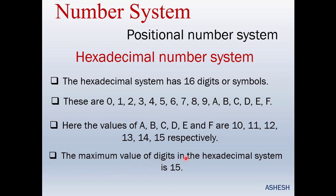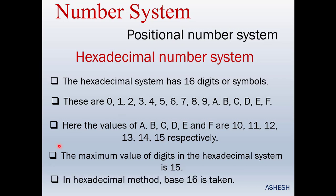The maximum value of the hexadecimal number system is 15, so the lowest value is 0 and the highest value is 15. The hexadecimal number system has a base of 16. Thanks for watching my video — be well always, thank you.